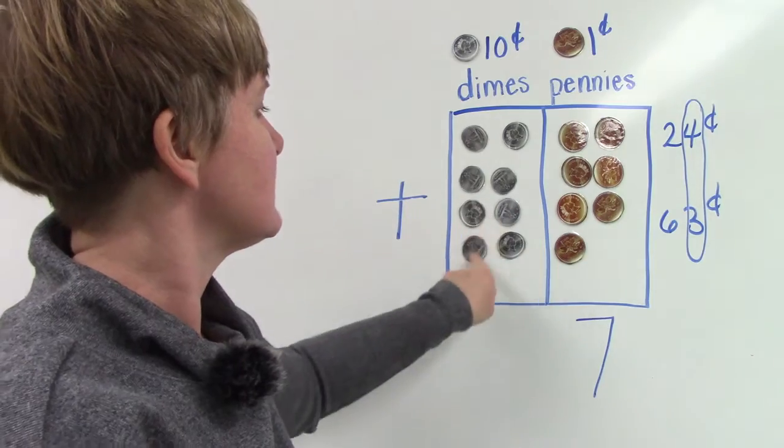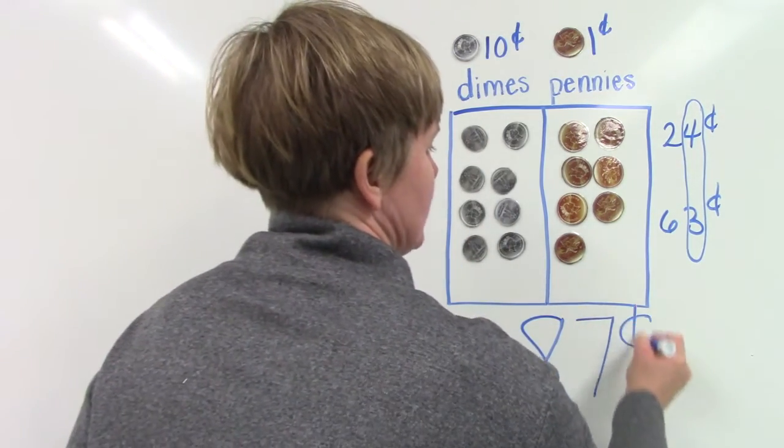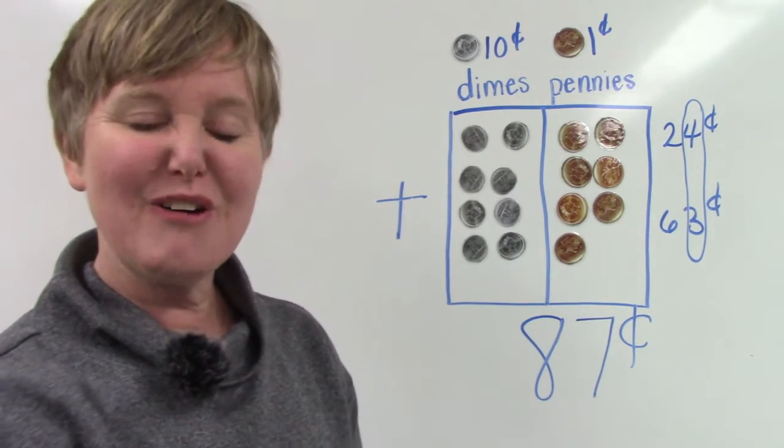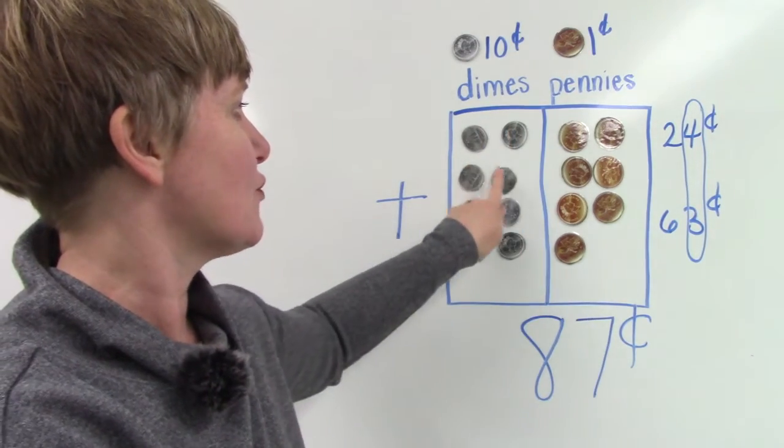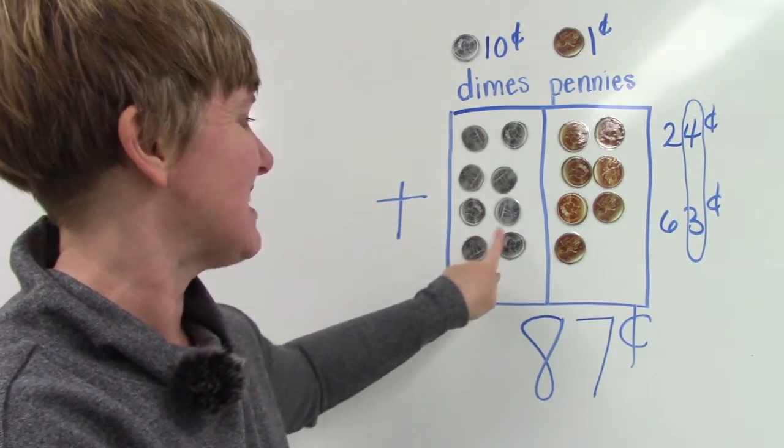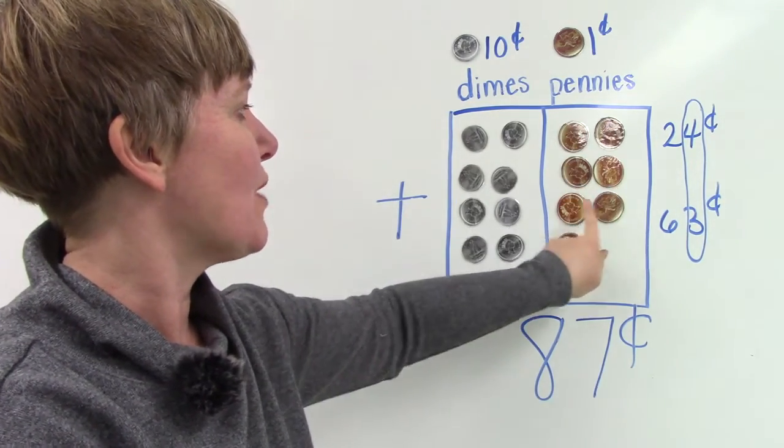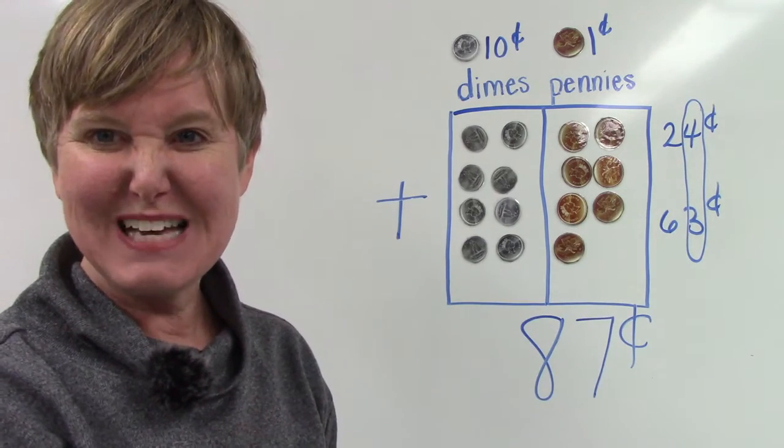Then over here on our dimes we have 1, 2, 3, 4, 5, 6, 7, 8. Our answer would be 87 cents. Now I want you to count the money with me: 10, 20, 30, 40, 50, 60, 70, 80, 81, 82, 83, 84, 85, 86, 87. 24 plus 63 equals 87 cents.